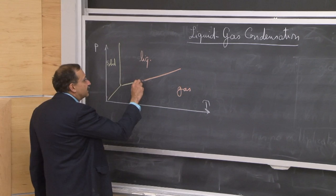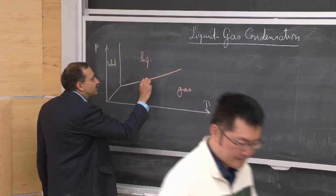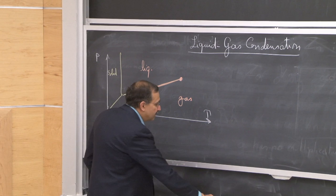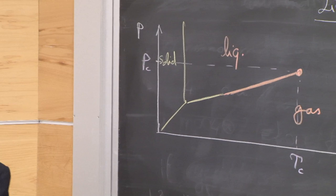What we are going to focus on now is not the solid portion of the phase diagram, but the portion that consists of the transition between liquid and gas phases. This coexistence line actually terminates at what is called a critical point, which we will talk about more today, at a particular value of Tc and Pc.